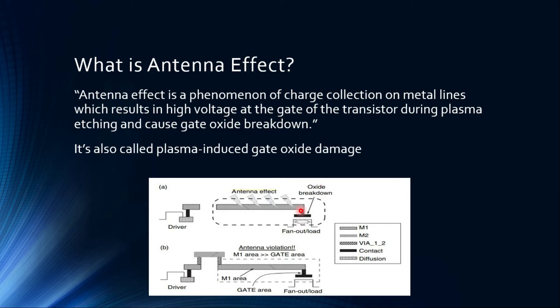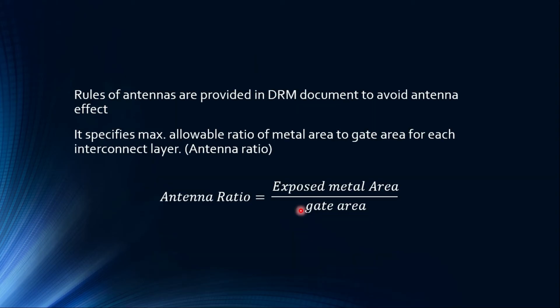So what happens is a large amount of electrons rush through this metal and it causes the gate oxide breakdown. This is a permanent damage to the gate oxide. It cannot be solved by any other means later, and that is why the antenna effect is also called plasma induced gate oxide damage. So the rules of antenna violations are provided in the design rule manual document to avoid antenna effect. This can be used in routers, the router engines of PNR stage. The placement and routing stages will use these antenna rules to do the routing. It specifies one very important parameter called maximum allowable ratio, which is also called antenna ratio. This is the maximum allowable ratio of metal area to gate area for each interconnect layer. So the value of the real exposed metal area divided by the gate area should be less than the maximum antenna ratio that they have specified in the foundry.